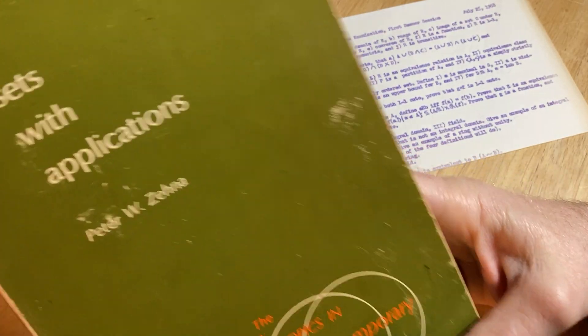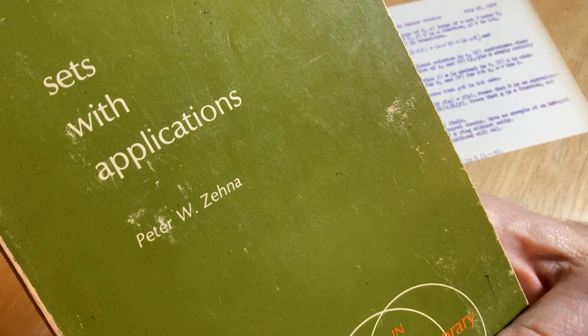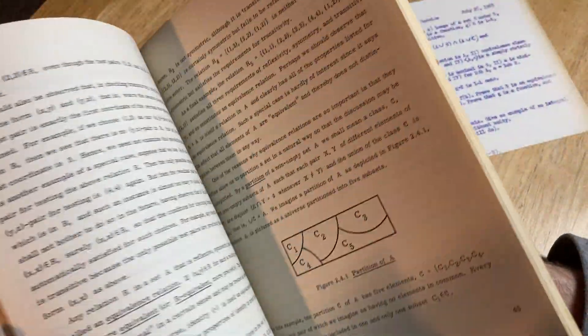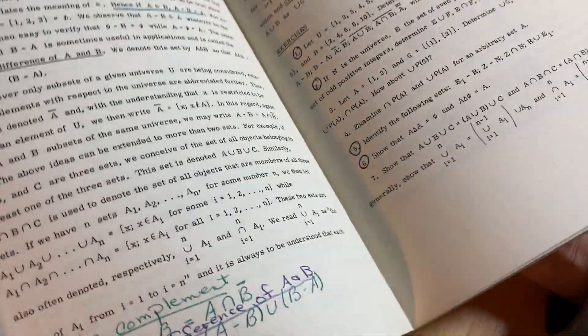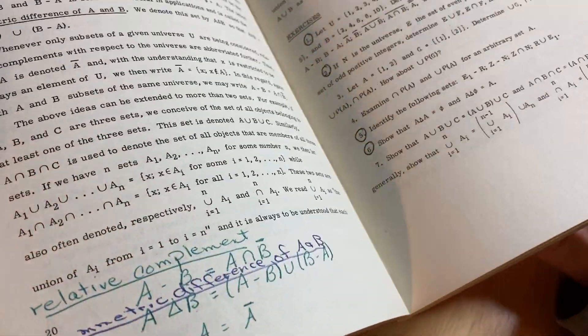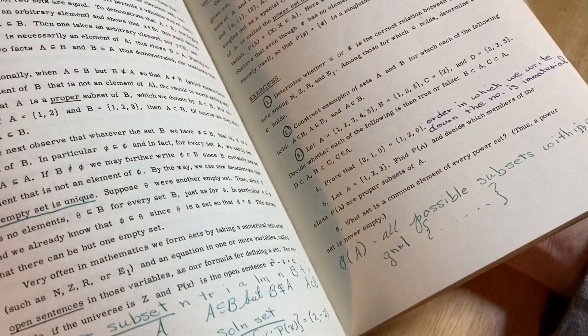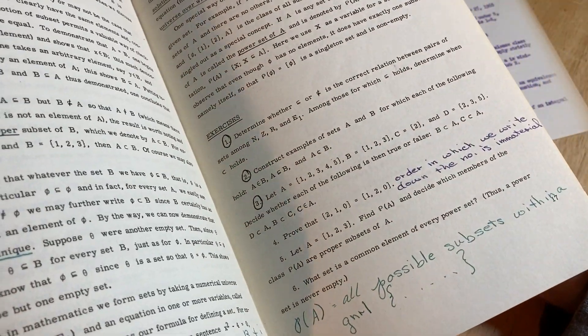The book is this one here, Sets with Applications by Peter Zehna. This is a book that someone gave me long ago. They actually used this book. That was probably their handwriting and they used this when they were in college. And this is a book on set theory.